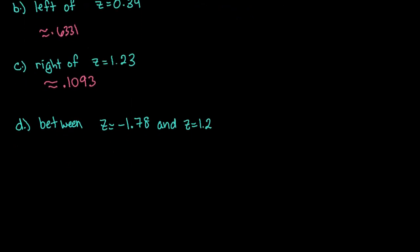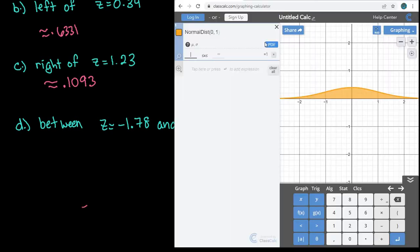Alright, and then the last one is between. So with between, what you would do is you can clear out your information, and you're going to start with the negative 1.78.